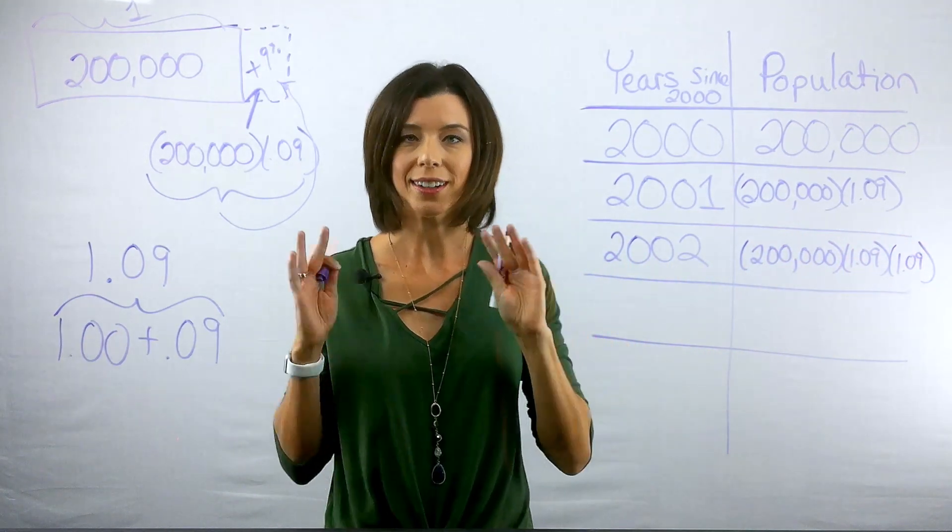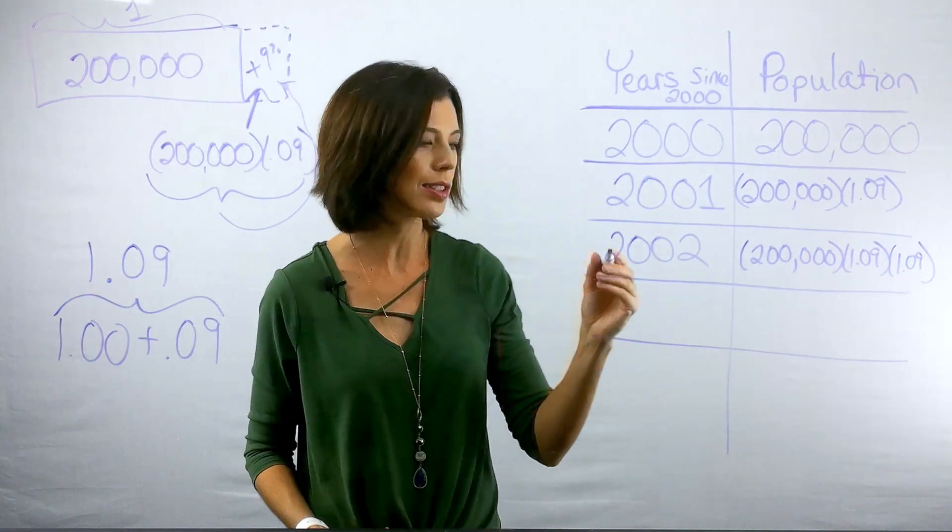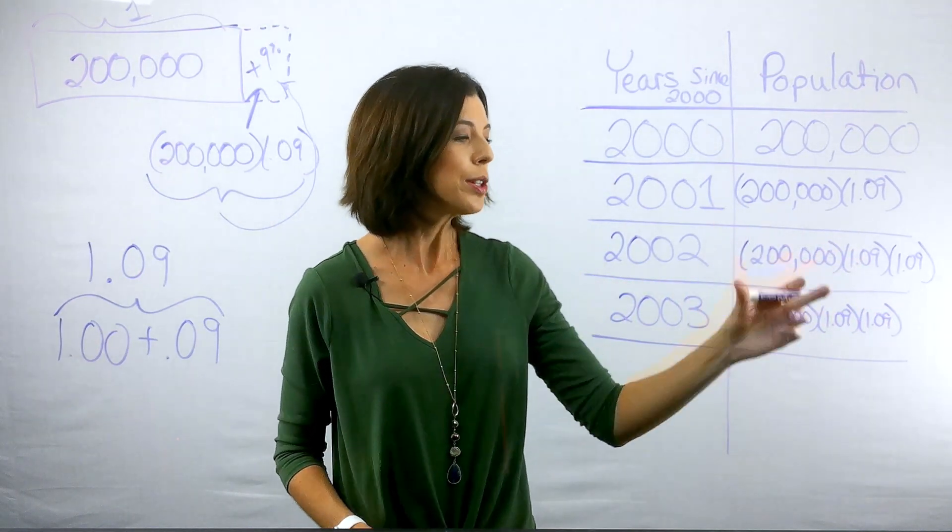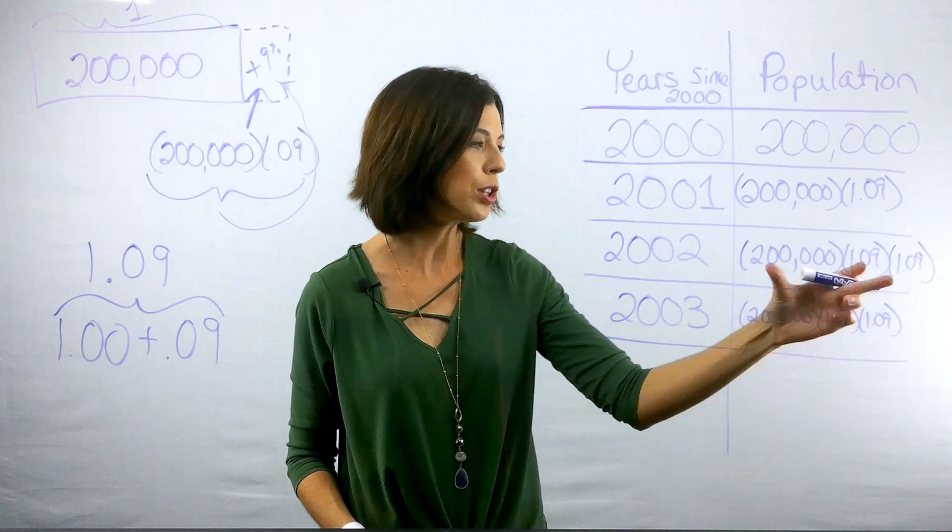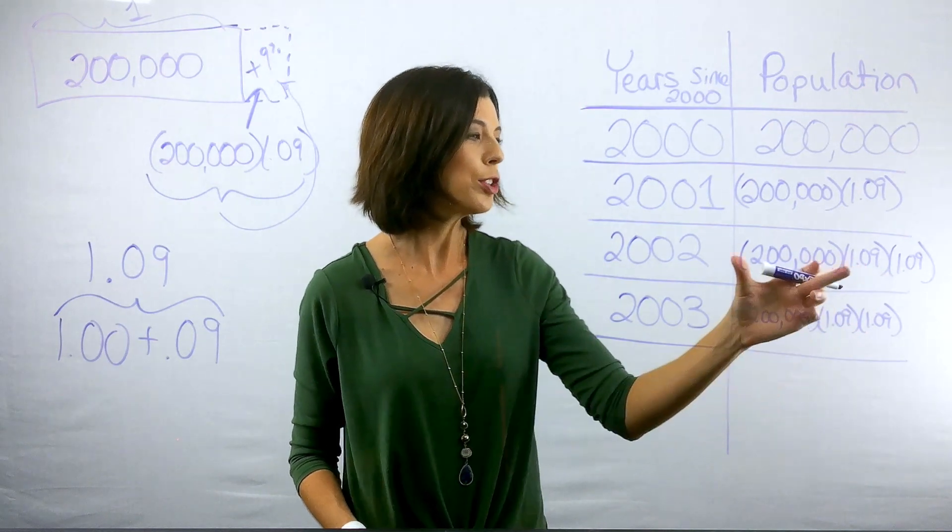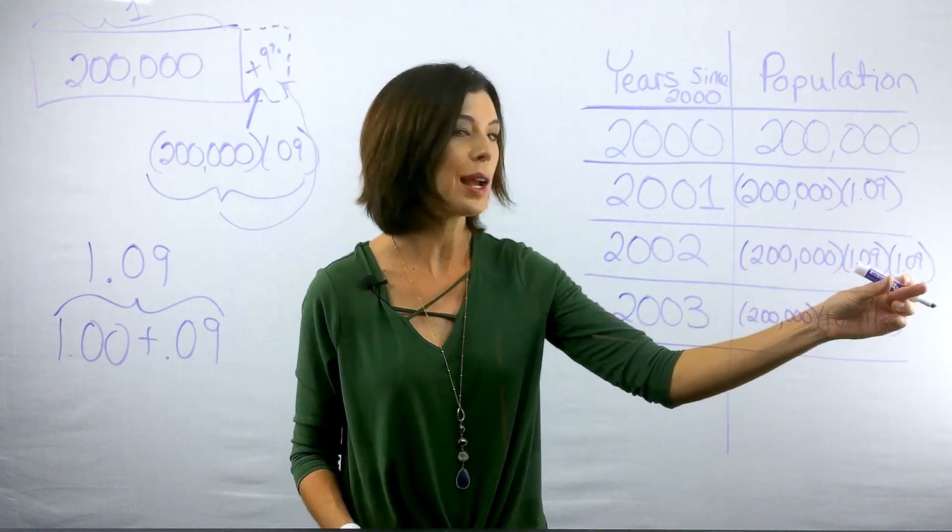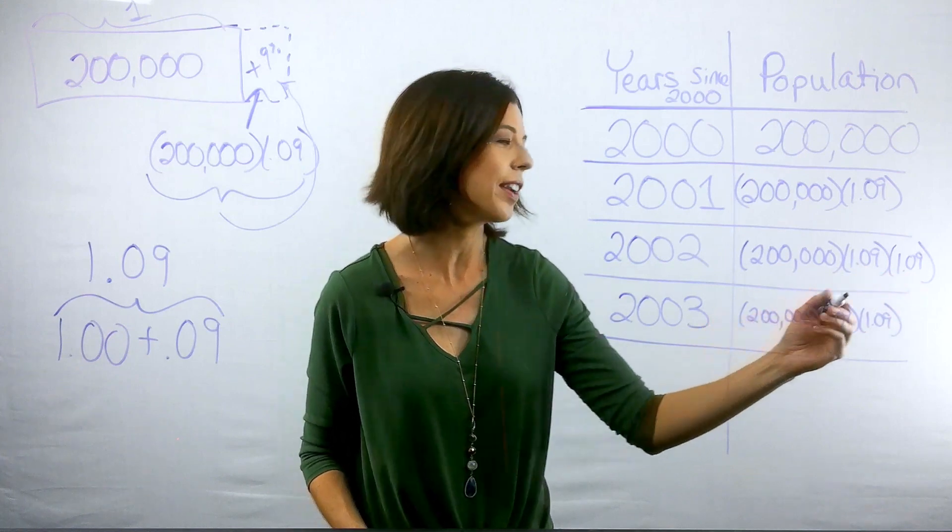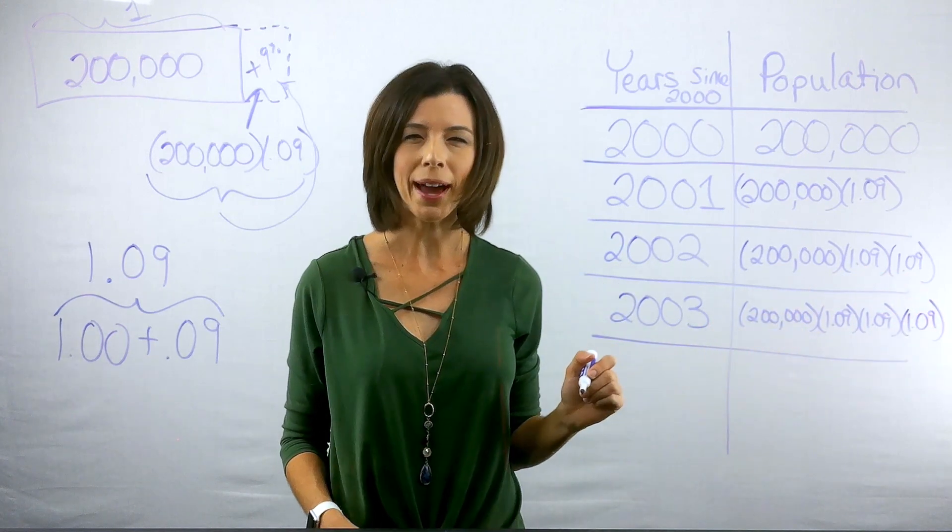Still no solving. Let's look at 2003. I'm looking for the previous year. So I'm taking the number of 2002, which is right here, which again, was 2001 times 1.09. And I need to multiply it by 1.09 again. Are you starting to see a pattern here?